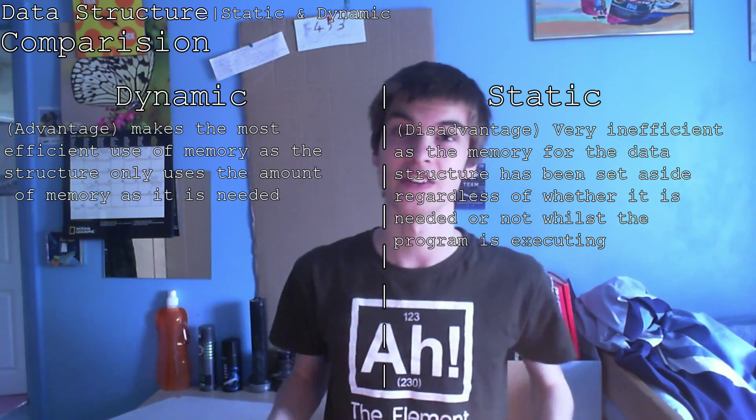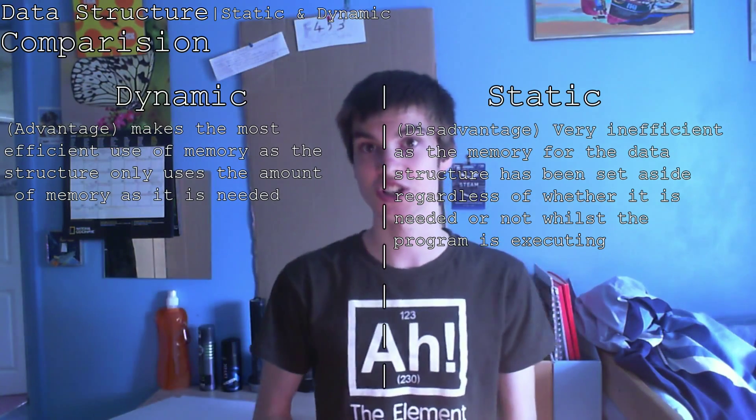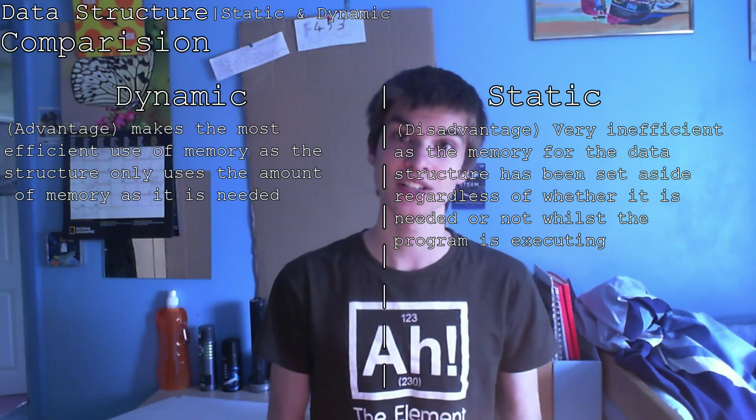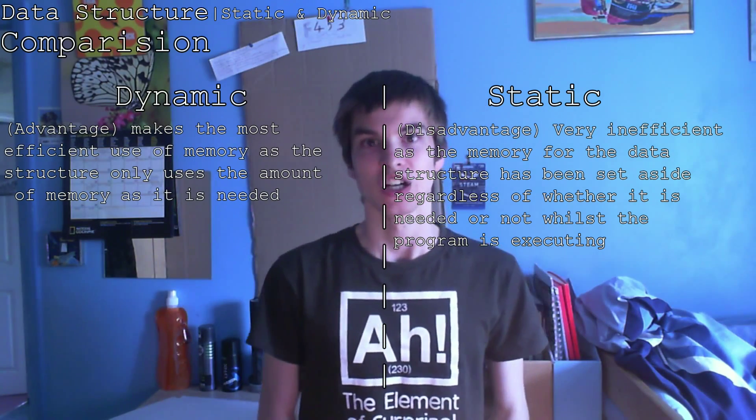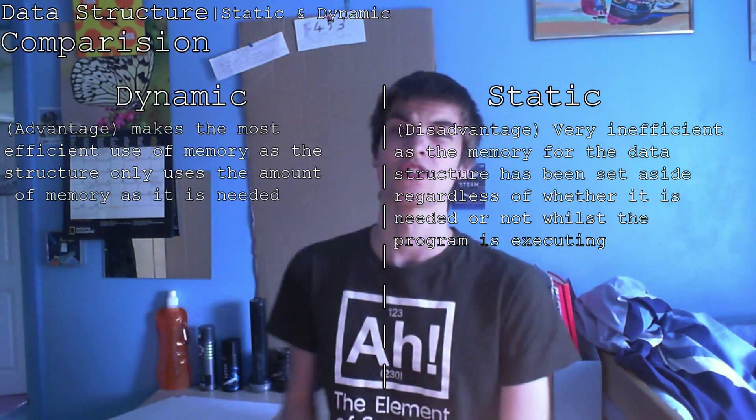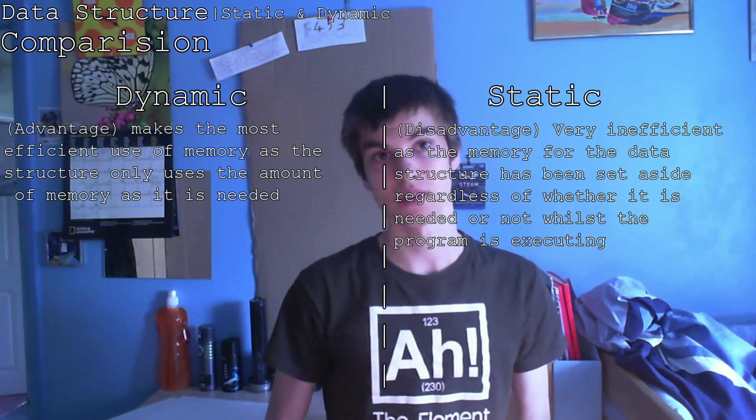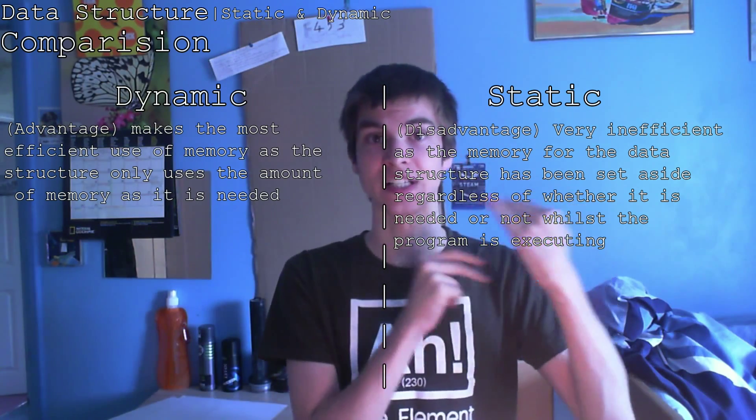A disadvantage of static is that it's very inefficient, as the memory for the data structure has been set aside regardless of whether it is needed or not while the program is executed. So static is just using up loads of space within the memory. Dynamic only uses what it needs at that time.